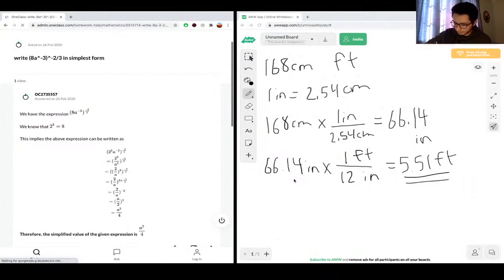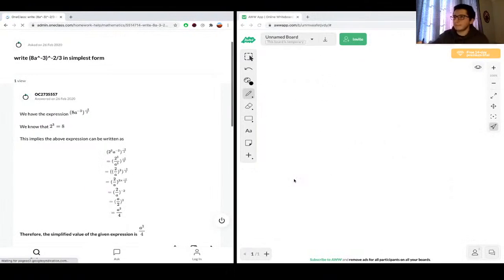So our next question that we're looking at is write 8 times a to the power of negative 3, all in brackets, to the power of negative 2 over 3 in its simplest form. So we have (8a^(-3))^(-2/3).